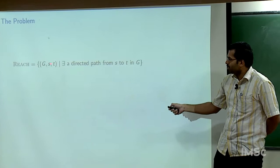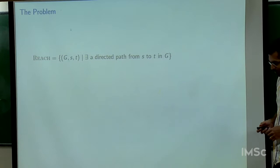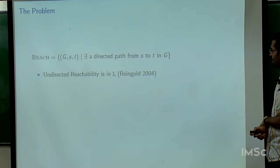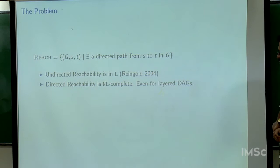You're given a directed graph and two designated vertices S and T, and you want to check whether there is a directed path from S to T. The undirected version of this is in log space, and the directed version is NL-complete. These are well-known results, and even for layered DAGs, this is known to be NL-complete.